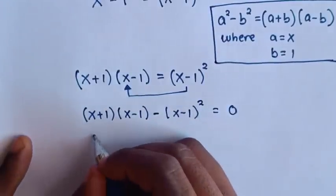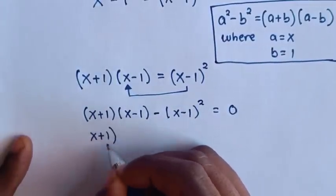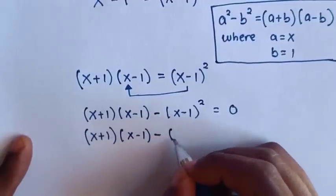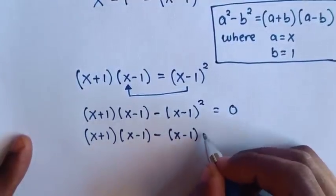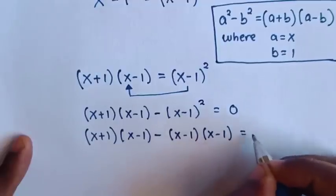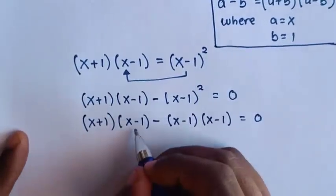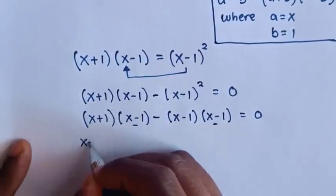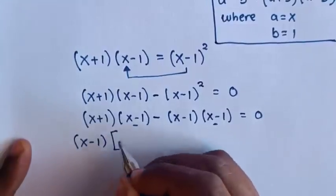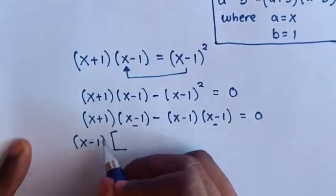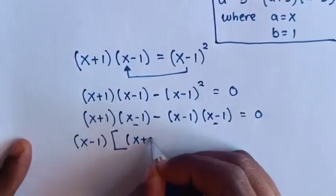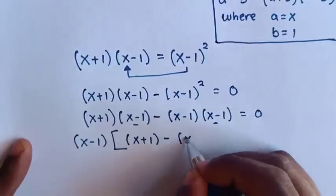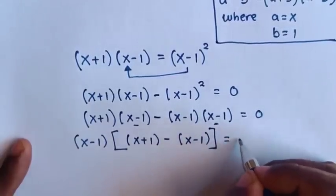Then from here, x minus 1 is common, so we take out (x minus 1). Then this divided by (x minus 1) gives (x plus 1), minus this divided by (x minus 1) gives (x minus 1), is equal to 0.